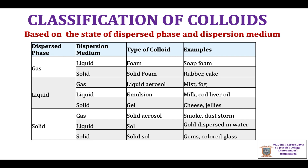When the dispersed phase is a solid and the dispersion medium is a gas, it is called a solid aerosol. Examples include smoke, dust storms, etc. When a solid is dispersed in a liquid — that is, the dispersed phase is solid and the dispersion medium is liquid — it is called a sol. The colloid of gold dispersed in water is an example; gold sol is the best example of a solid dispersed in a liquid.